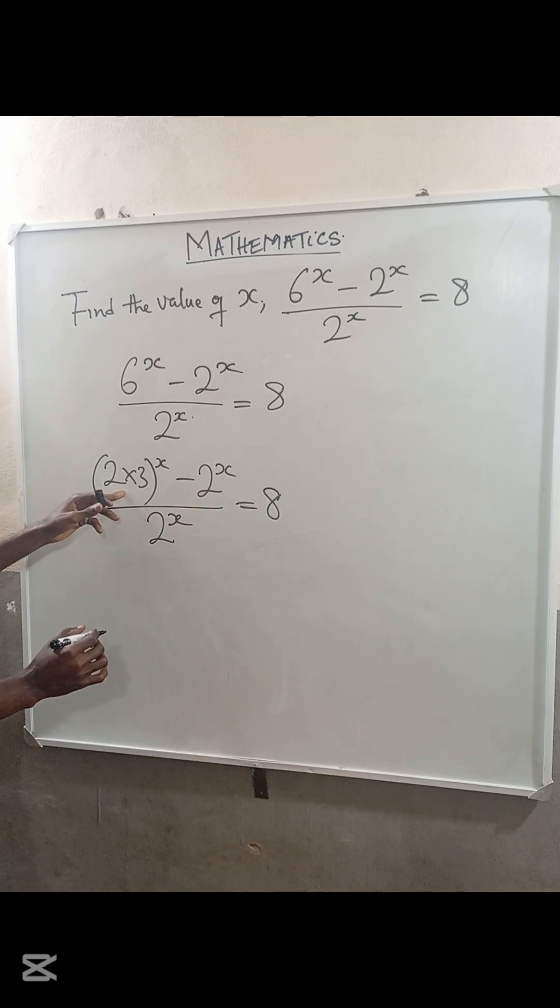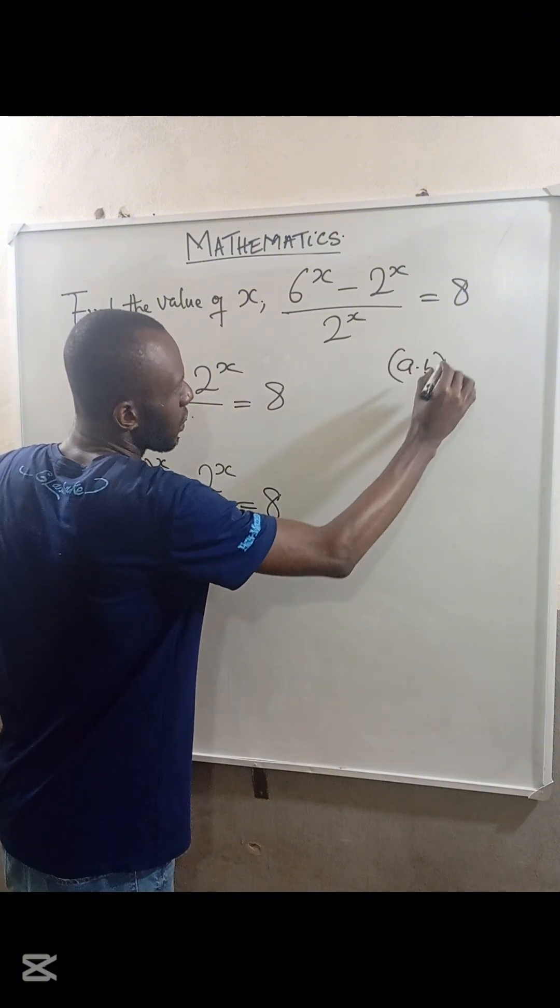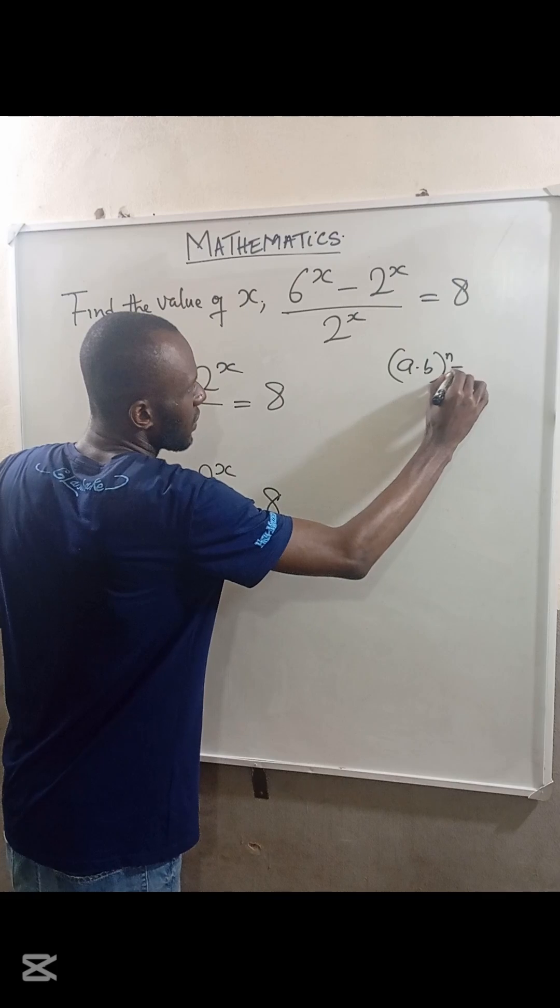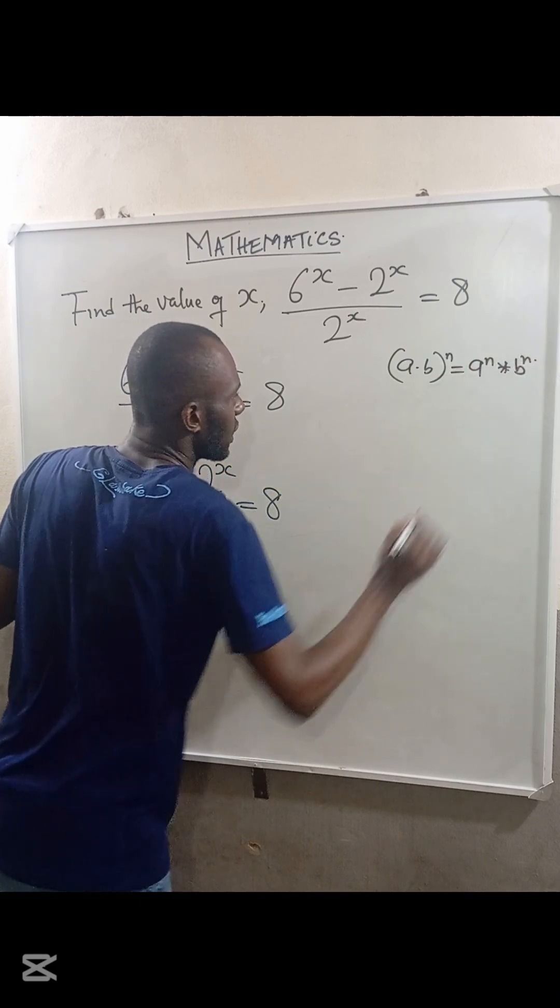From the product power law, we know that if I have (a×b)^n, this can be expressed as a^n times b^n.